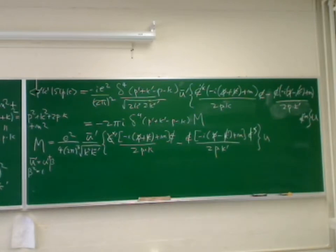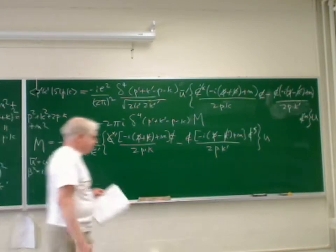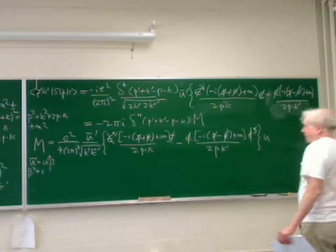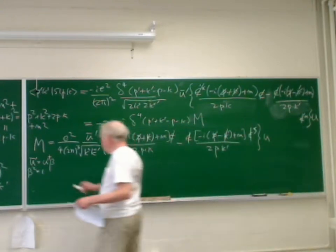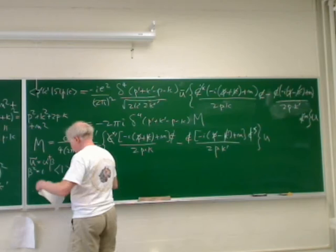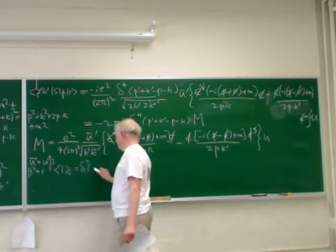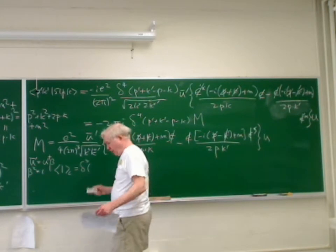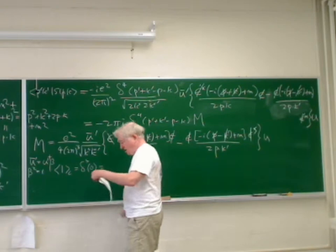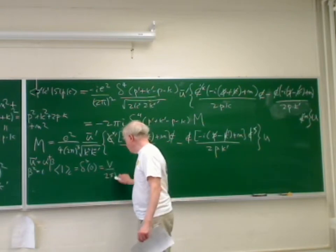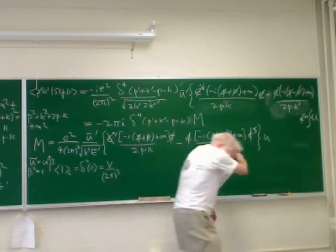To get a probability, we need to think about the normalization of states. The states we're using are continuum normalized, so they're normalized to delta^3 of zero, which is the volume divided by (2π)^3. Delta^4 of zero is space times time.